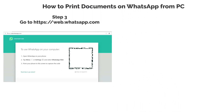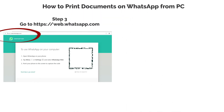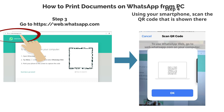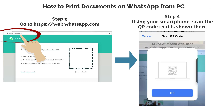Step 3: Go to https://web.whatsapp.com. Step 4: Using your smartphone, scan the QR code that is shown there.